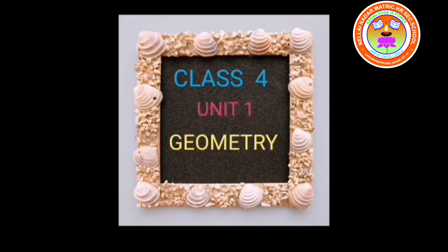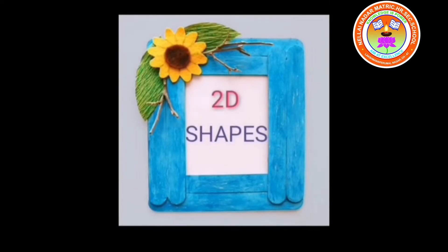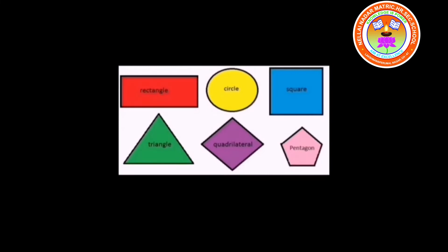2D shapes. Examples of 2D shapes: rectangle, circle, square, triangle, quadrilateral, pentagon.